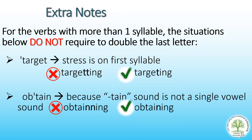So the last letter T in 'target' should not be doubled when adding -ed or -ing. For the verb 'listen,' although the stress is on the last syllable, the sound is not a single vowel sound. Therefore, it is also not required to double the last letter N.